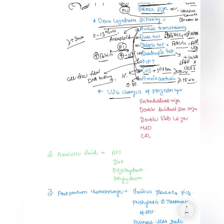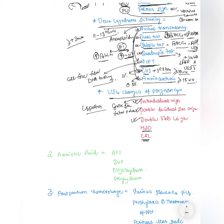An important topic is USG changes in pregnancy, most likely to come as image-based spotters in your exam. You need to know: what is the intra-decidual sign, double-decidual sign, double bleb sign, mean sac diameter, and crown-rump length. The double bleb sign shows the yolk sac and amniotic sac appearing like two balls.